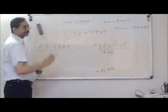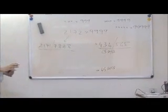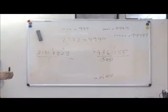This is the fastest technique which can be used to multiply a number with a series of 9s.